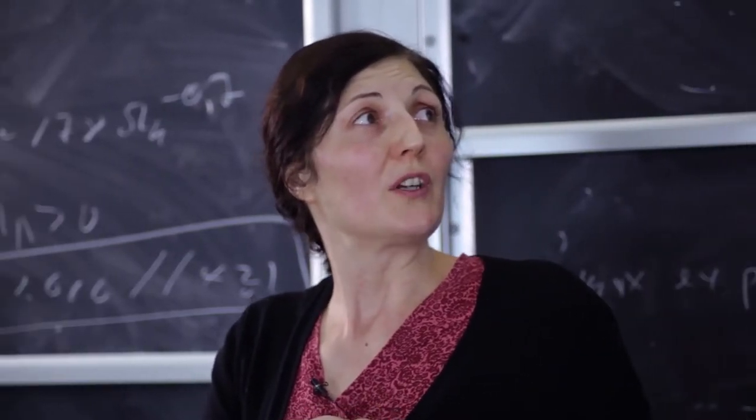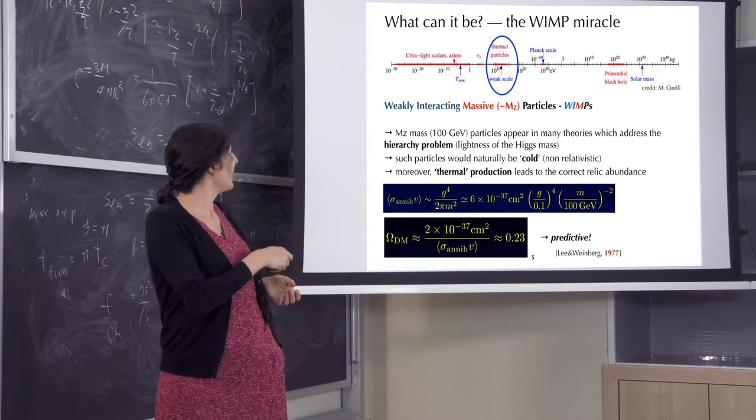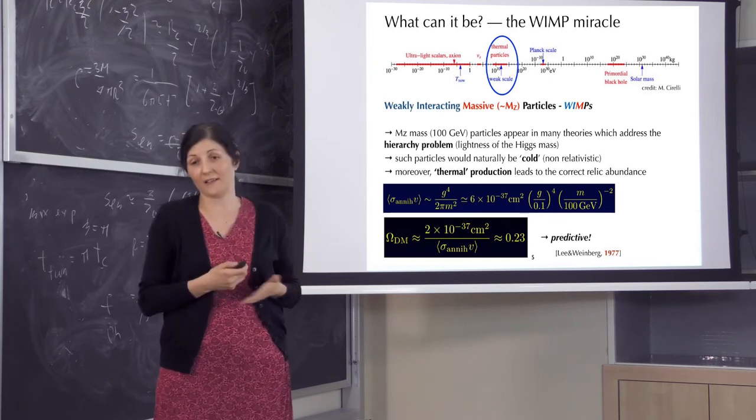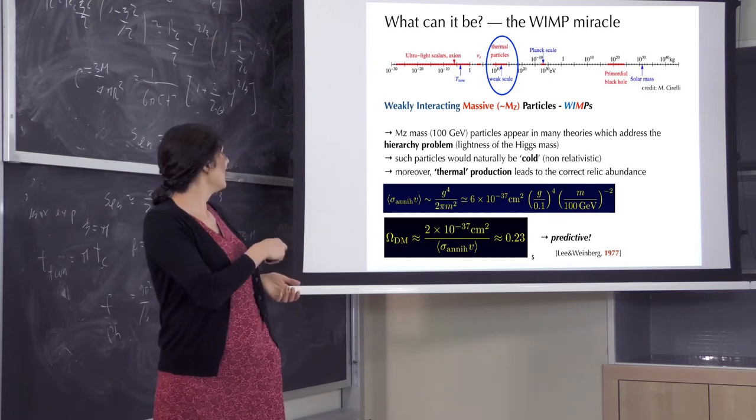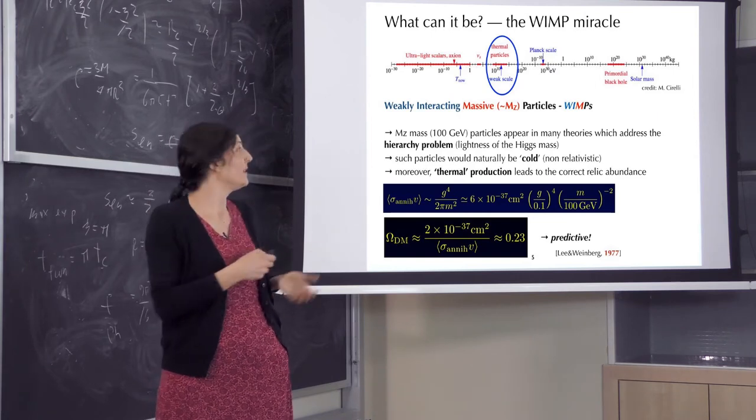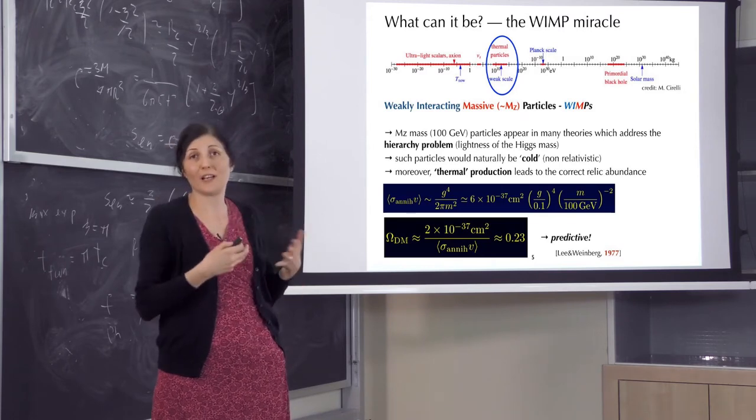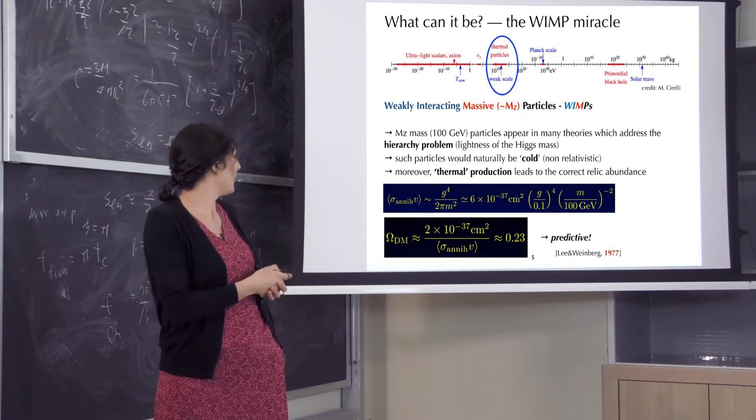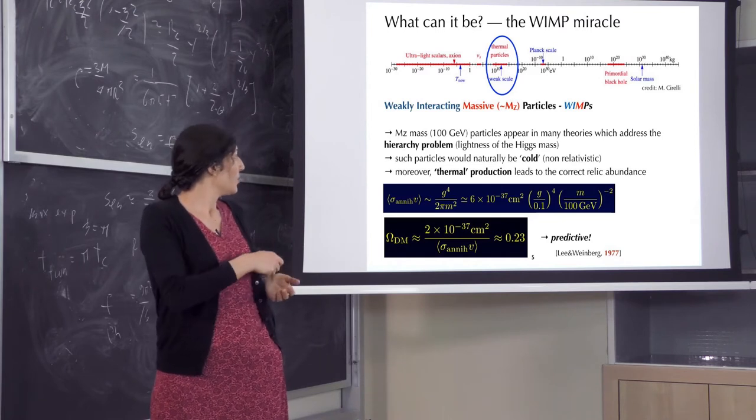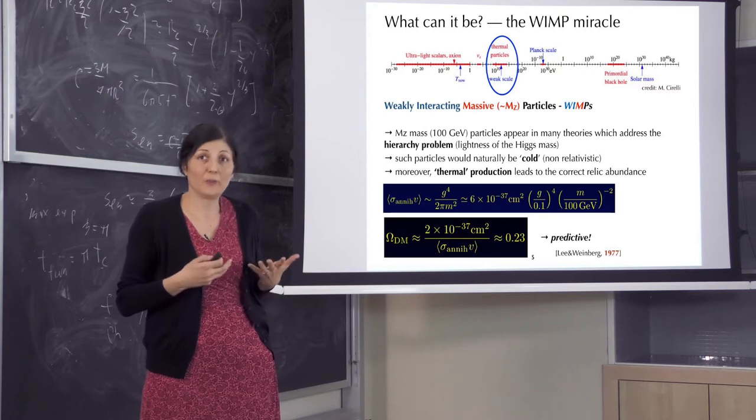But one of the most popular masses that we look for dark matter at is around hundreds of GeV. Such models are called weakly interacting massive particles or WIMPs. Why do we think that a particle around 100 GeV, which is 100 times heavier than a proton, could be dark matter? It is because we know that the standard model, the model of particle physics that we have today, is incomplete.